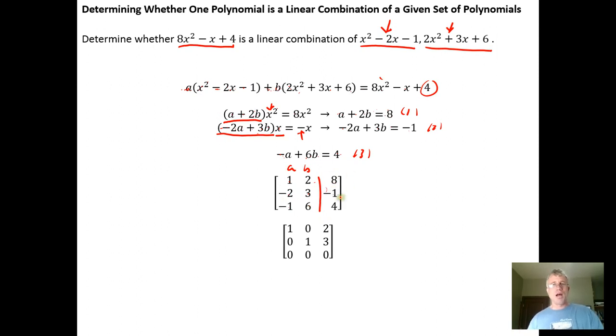And we just put it into reduced row echelon form, either by hand, or we use the computer algebra system to do that. Once we get it into reduced row echelon form, we interpret it to see if solutions exist or not. And in this case, they do. A is equal to 2, and from row 2, B is equal to 3.